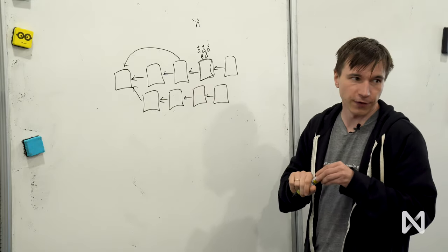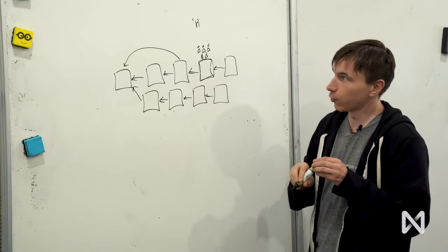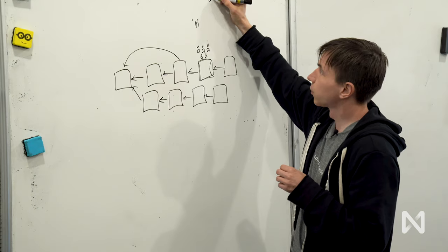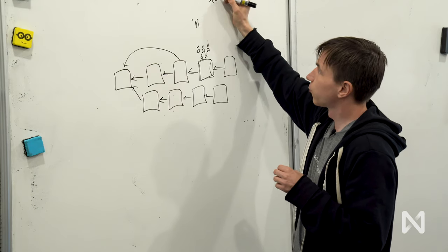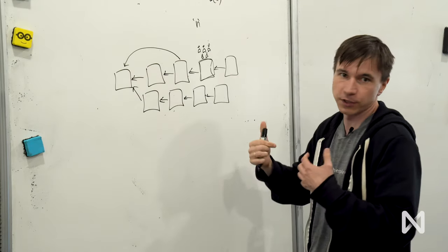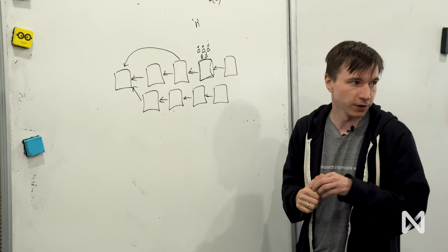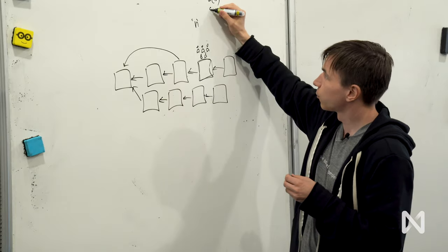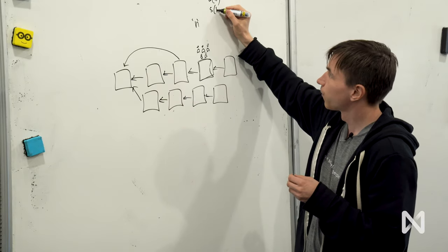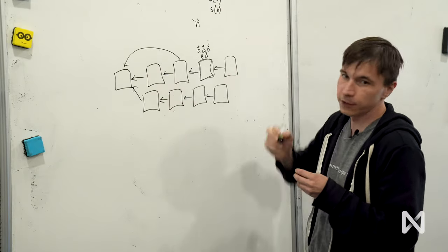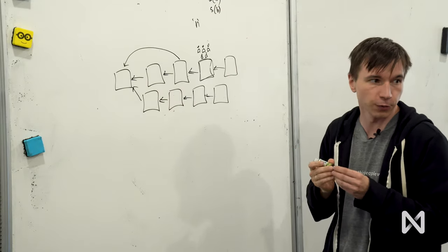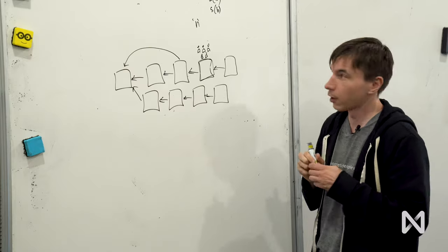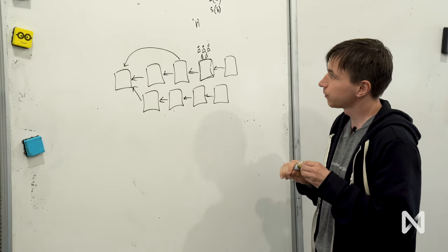We will define another property of a block. We already said that the weight of a block is external to the finality gadget. We will now define another concept called the score of a block, which is another integer associated with a block that is non-decreasing between blocks.